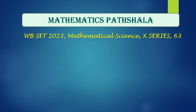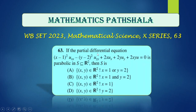Now let's look at another problem of partial differential equations — Question No. 63 from Question Booklet Series X. The problem states: if the given partial differential equation is parabolic in S, a subset of R², then S is: (A) {(x,y) in R² : x=1 or y=2}, (B) {(x,y) in R² : x=1 and y=2}, (C) {(x,y) in R² : x=1}, or (D) {(x,y) in R² : y=2}.